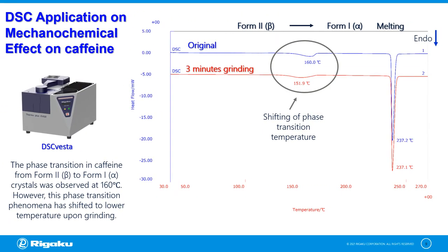Caffeine is often used in combination with other drugs as stimulants, pain relievers, diuretics, cold remedies, weight control products, bronchial and cardiac stimulants, as well as in drugs for the treatment of skin disorders. We measured the thermal behavior of anhydrous caffeine using DSC from room temperature to 270°C. Results show an endothermic peak near 160°C due to phase transition and a sharp endothermic peak near 237°C due to melting. However, grinding the caffeine for 3 minutes caused a shift of the phase transition temperature to near 150°C.